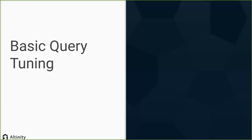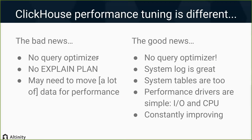Now let's dive into some basic query tuning. Before looking at queries, let me give you an overview. If you're coming here from Oracle or another proprietary data warehouse, things are pretty different. Some bad news: there's no query optimizer — nothing that can evaluate the distribution of data, figure out query cost, and devise an efficient plan by magic. Not only is there no query optimizer, there's also no EXPLAIN PLAN command. So if you're used to using explain plan, you won't find that in ClickHouse either.